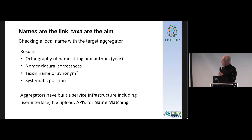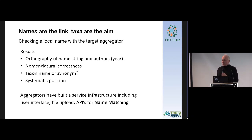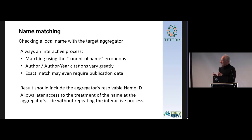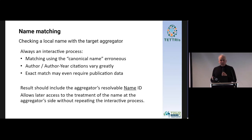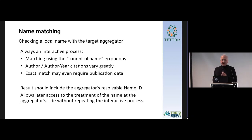You can get information on nomenclature correctness, and also, if there's a taxonomy in the aggregator, you get the taxonomic position and whether it's a valid or accepted name. We already have these services — they are out there, you can do all this already in several places. If you're doing it, you'll always end up in an interactive process, because if you compare name strings, you always get a remainder of things that don't match or don't match completely. So, using the name string itself as the identifier of the name doesn't work.